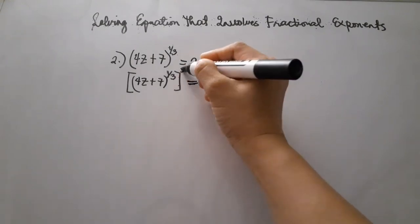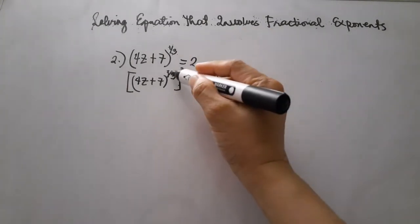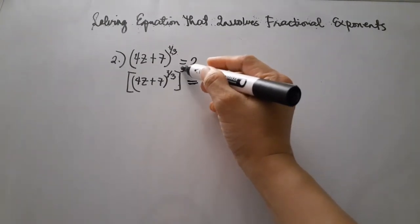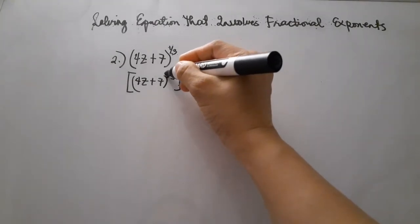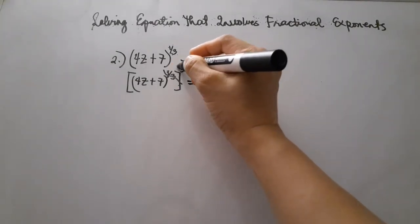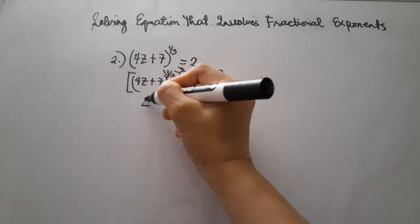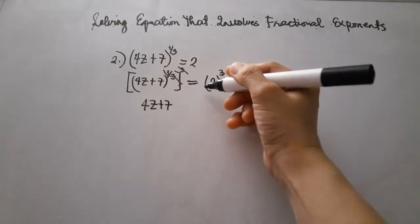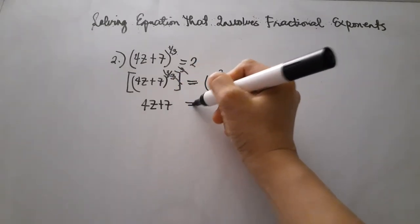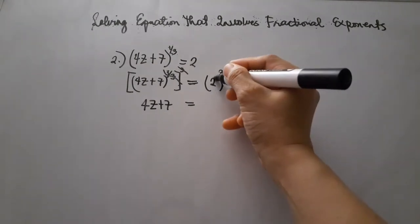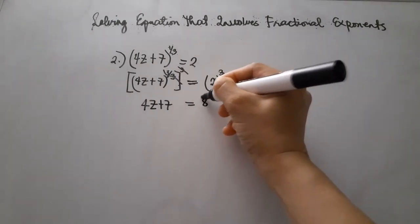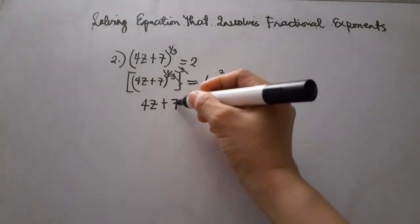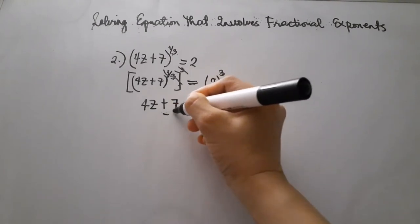3 times 1 is equal to 3, and 3 over 3 is equal to 1, so the exponent on the left cancels, leaving 4z plus 7. On the right side, 2 cubed equals 8. To isolate the constant term 7, we add negative 7 to both sides.